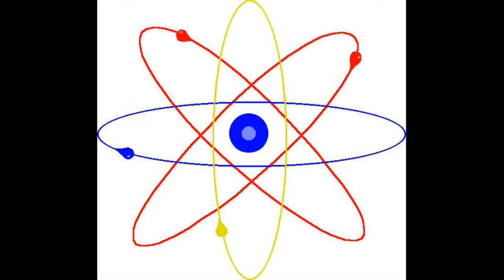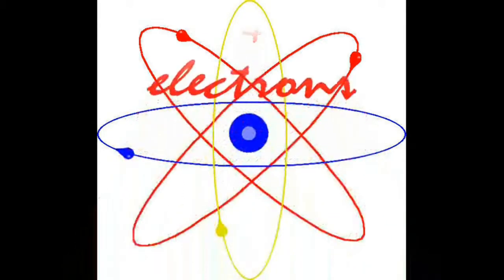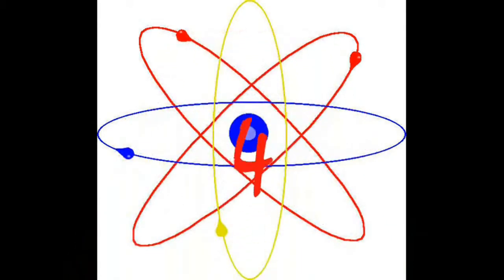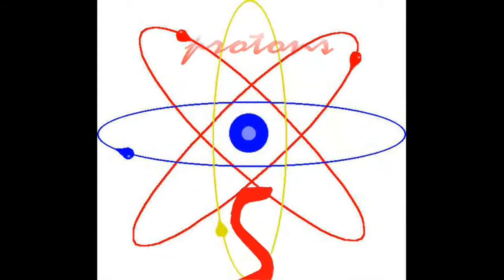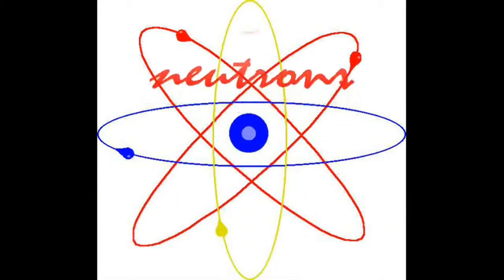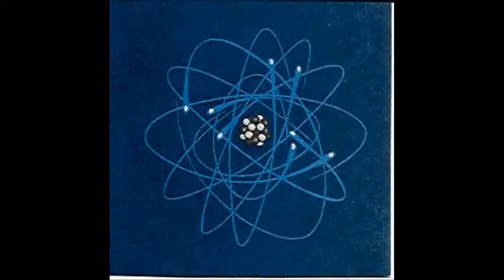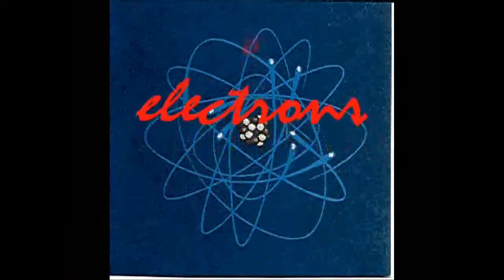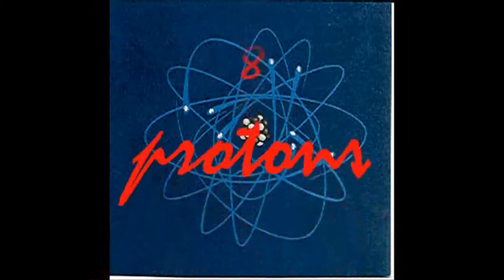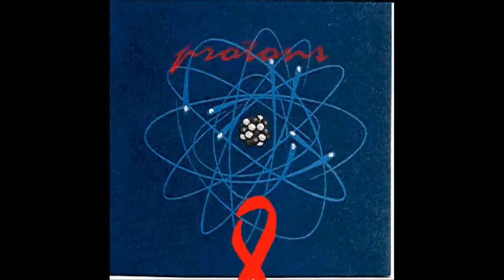Protons, neutrons, and electrons — they are friends, you see. They are found in atoms, which make up everything. They help us understand all about electricity. Yes, protons, neutrons, and electrons are important things.